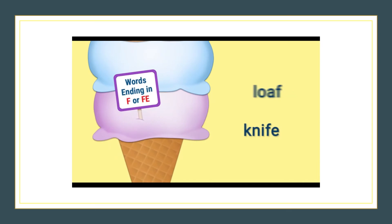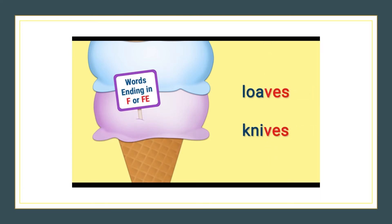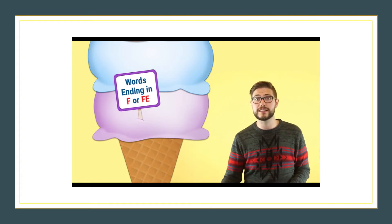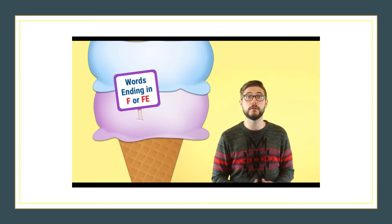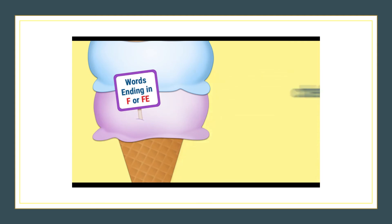If the word ends in F or FE, we often change the F or FE to V and add ES, as in loaves and knives. You can hear the V sound when the word becomes plural — loaves, knives. Now some words ending in F don't change when they become plural. You don't hear a V sound, so you just add S, as in chefs and puffs.